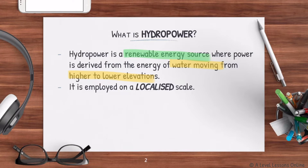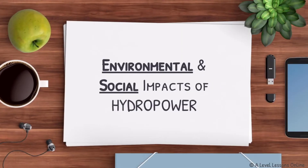Hydropower is usually employed on a localized scale. This is the first key factor to remember. For example, is there a huge ocean, river, or lake outside your window where hydropower can be exploited? Usually not. Hydropower must be used on a localized scale, where a river or moving water is actually present to generate electricity.